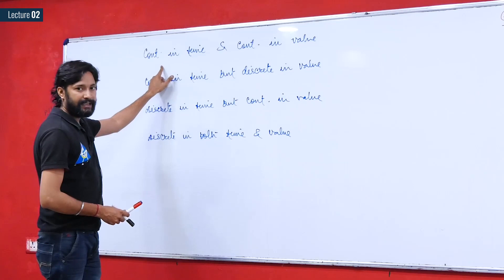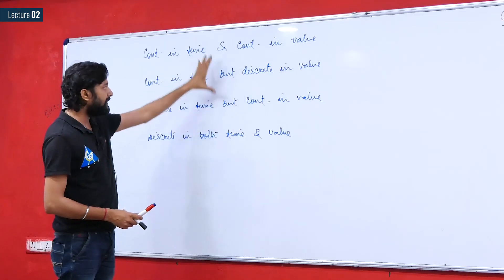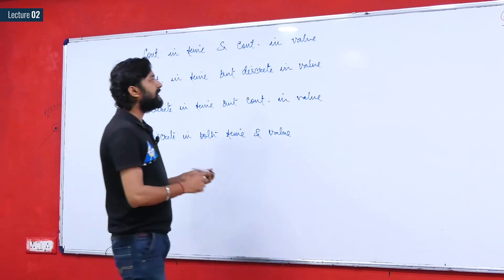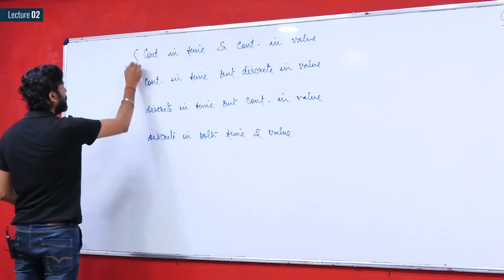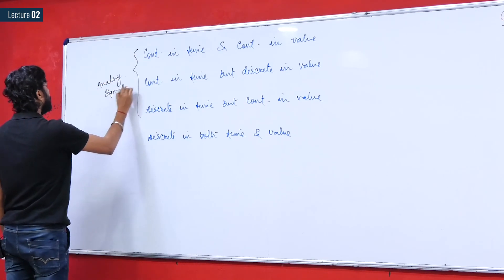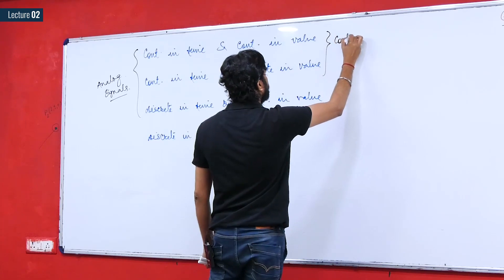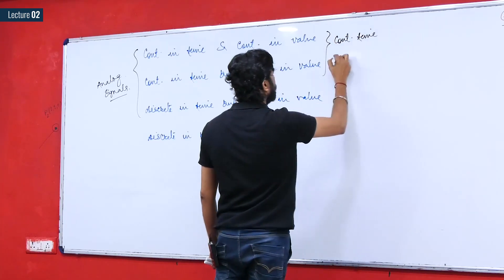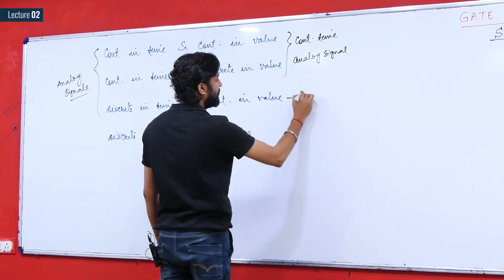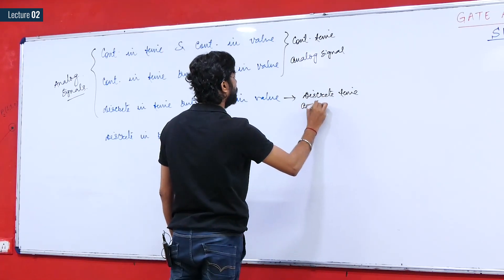Signals continuous in both time and value, or continuous in only time, or continuous in only value — all three are analog signals. The first two types are continuous-time analog signals, while the third type — discrete in time but continuous in value — is a discrete-time analog signal.